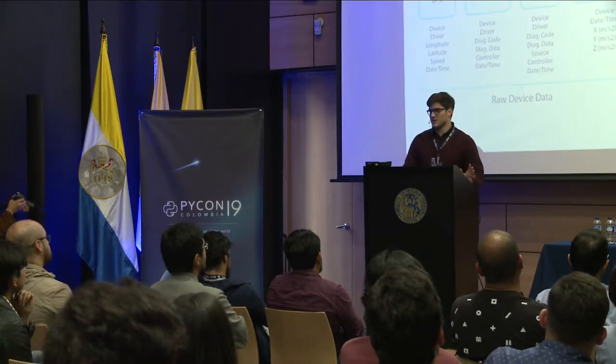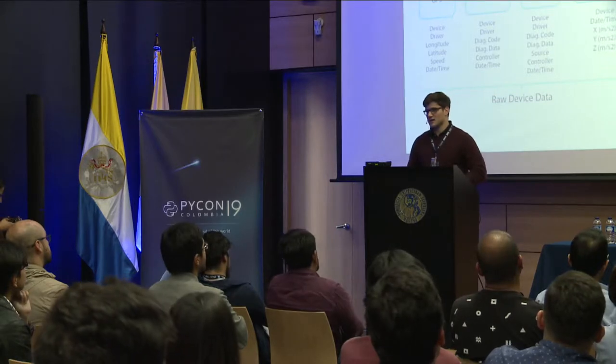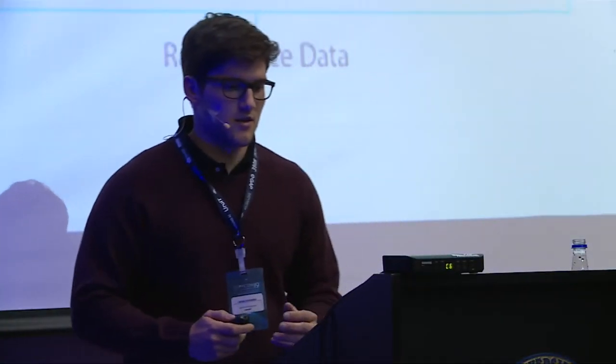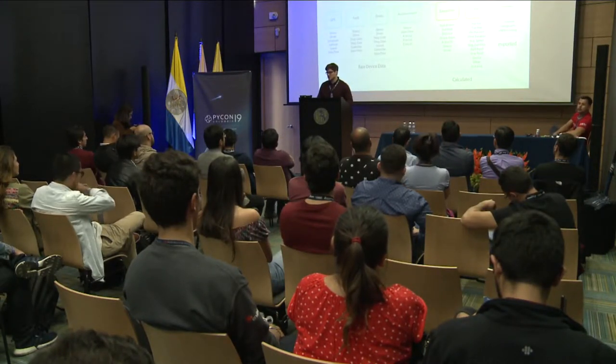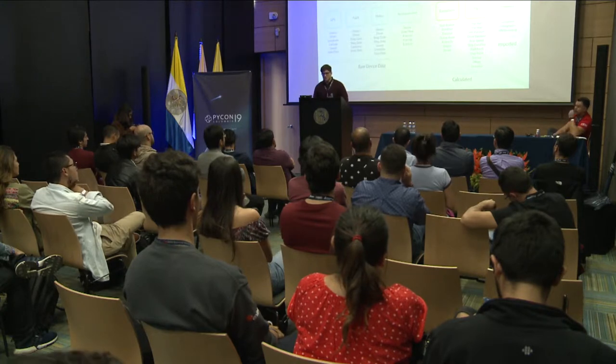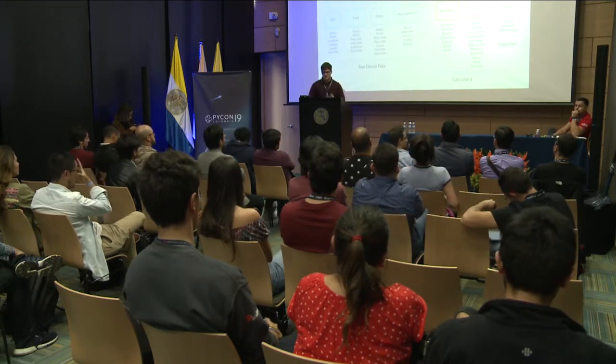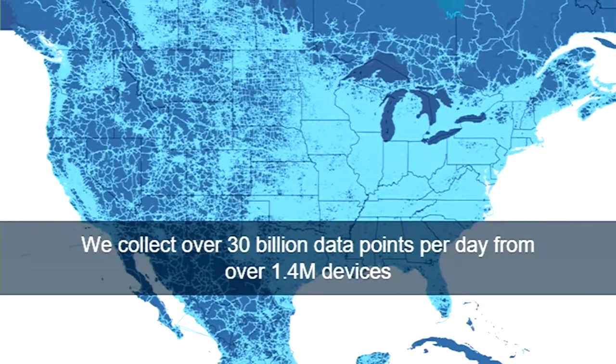We can join speed data with speed limit information from roads to get real speeding incidents. We calculate trips and add features to every trip — distance, duration, time driving, time idling — and we join that with geospatial information and external tools such as VIN decoding to understand the type of vehicle. We are collecting right now over 30 billion data points per day from more than 1.4 million devices. Only a third of those points are GPS; the others are vehicle faults, engine measurements, and accelerometer data.